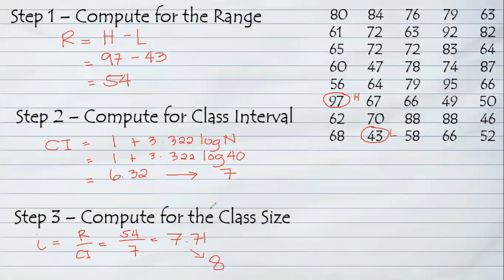Therefore, we have now the elements in creating frequency distribution table. Again, we will first identify the lowest and highest, then directly get the range by subtracting the highest to lowest, followed by identifying the class interval using the formula given, and lastly is to compute the class size, which is dividing the range all over the class interval.